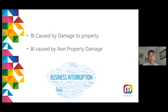The material damage proviso requires that the business interruption losses flow from an incident of property damage. In most cases, COVID-19 will be a disease affecting human life and will not cause property damage. There is currently no case precedent to support an argument that contamination by pathogens can amount to material damage — the concept has been explored in other jurisdictions but not yet in England and Wales. The material damage proviso may be satisfied where the business required a deep clean, but periods of closure for deep cleaning are likely to be relatively short and the resulting losses relatively small.